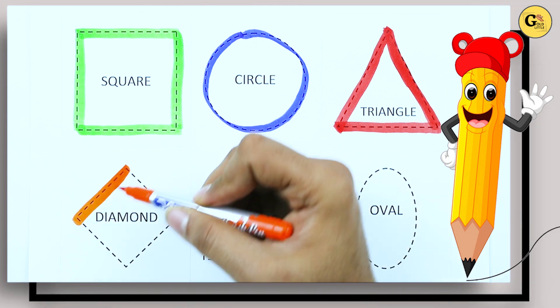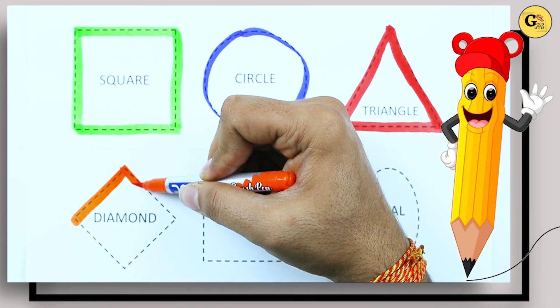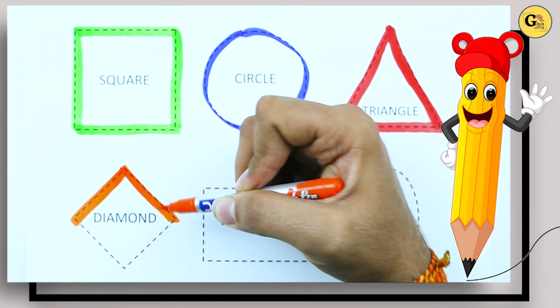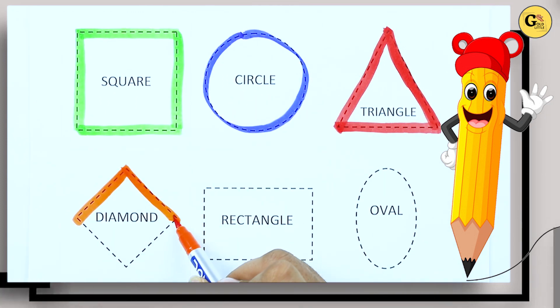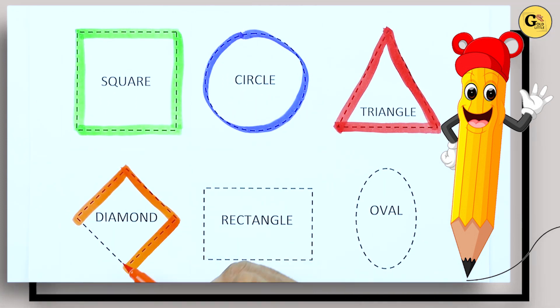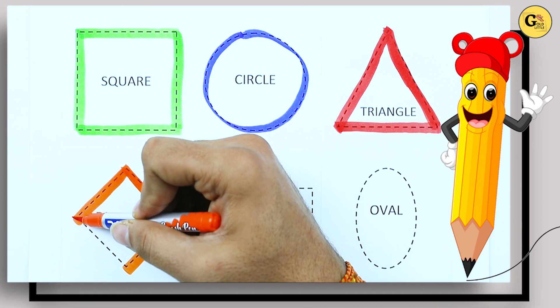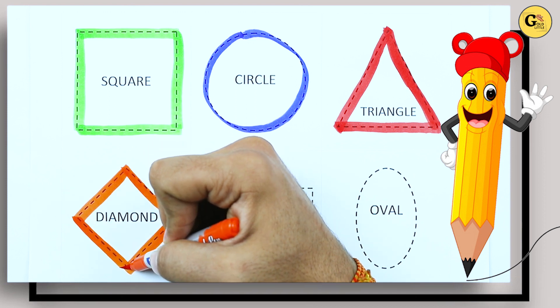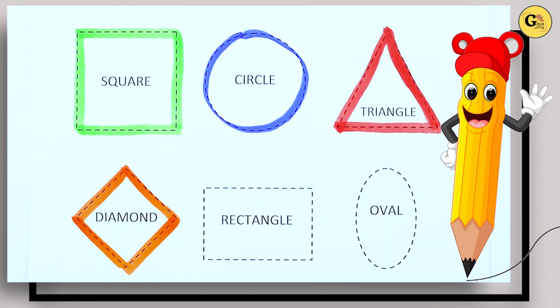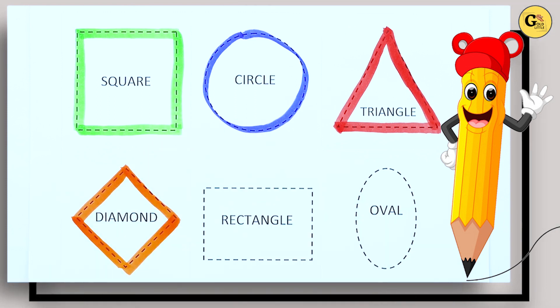One sliding line, two sliding line, three sliding line, four sliding line. It's a diamond, orange color, diamond.